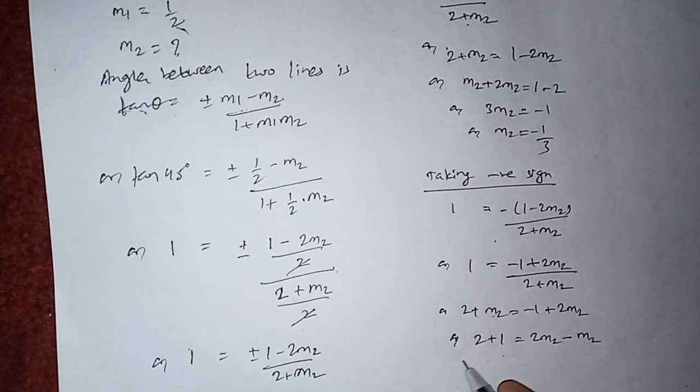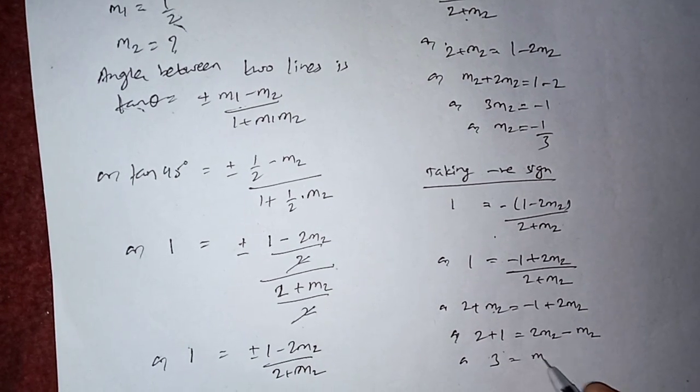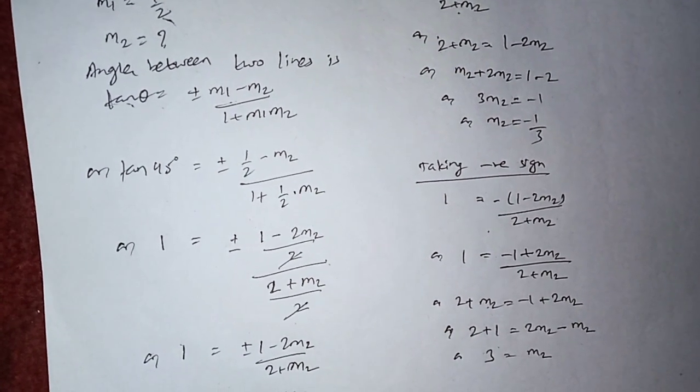2m2, this m2 bring this side will be minus. So 3 equals to m2.